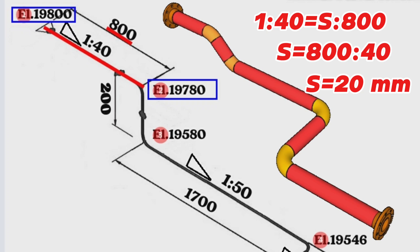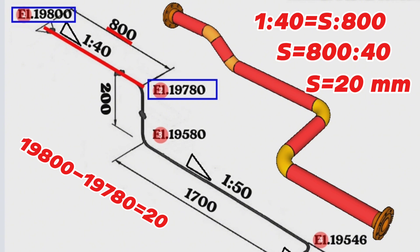Let's check this with a different method using elevation levels. From 19,800 millimeters, which is the height level of the starting point of the pipeline, we subtract 19,780 millimeters, which is the height level of the downward turn point. 19,800 minus 19,780 equals 20 millimeters. It means the slope of the pipeline over 800 millimeters distance is 20 millimeters.